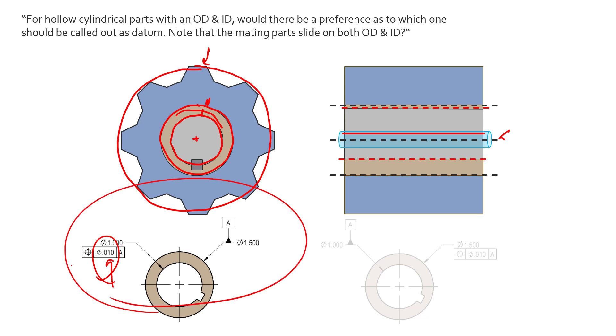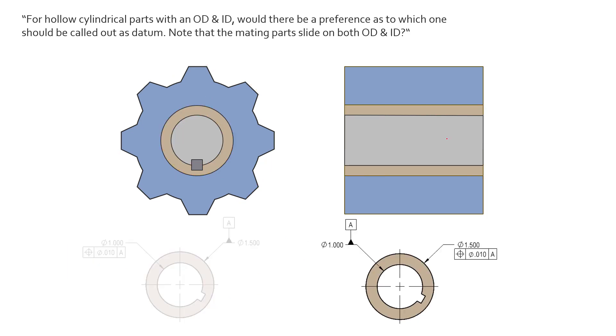But what if we shift a little bit and show the position error in relation to the outside diameter and call our inside diameter our datum feature? Again, we see our datum feature now is the ID, identified by these black lines and this black axis. The black axis being our datum, but we get a datum axis down the center of this part still.